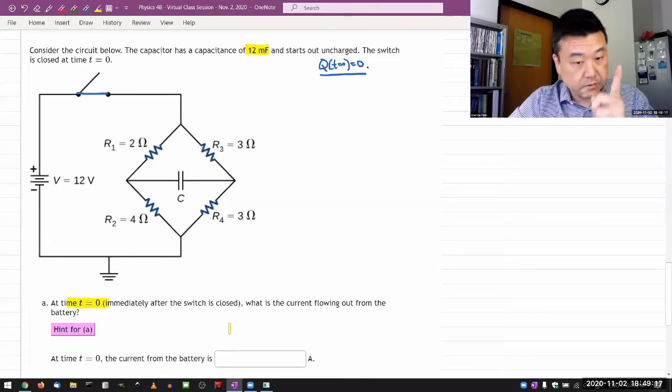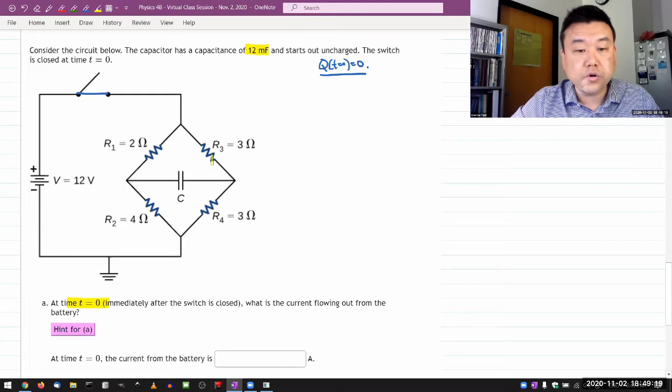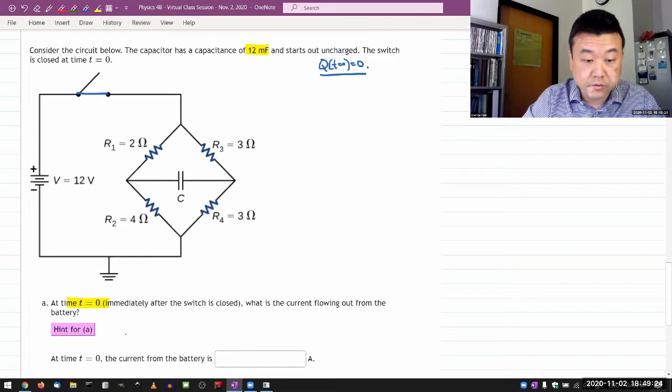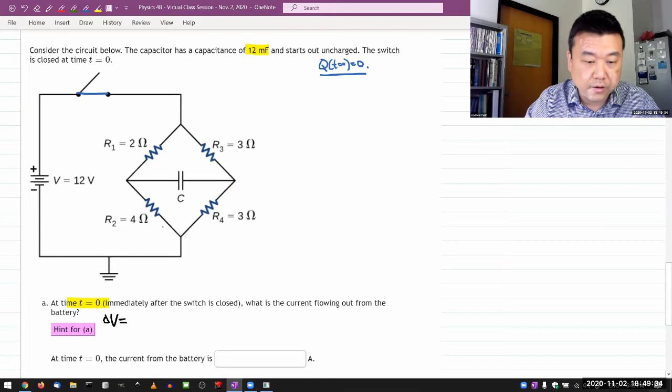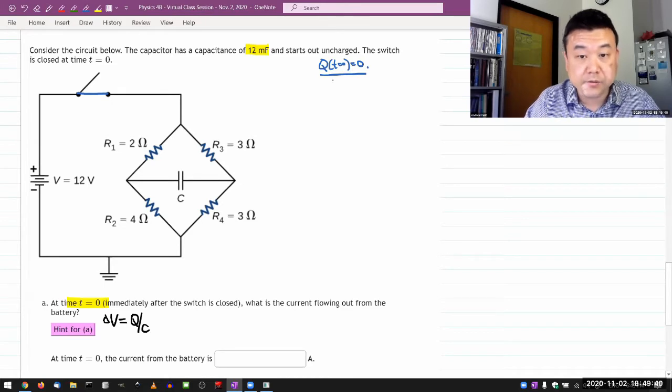The thing to note about the transient behavior is that it's governed by this rule: the voltage drop across the capacitor is given by the definition of capacitance. Doing the rewriting of the definition, you get delta V is equal to q over c.